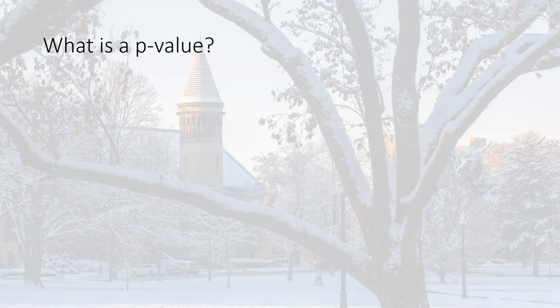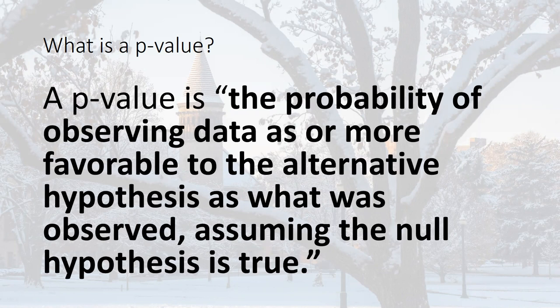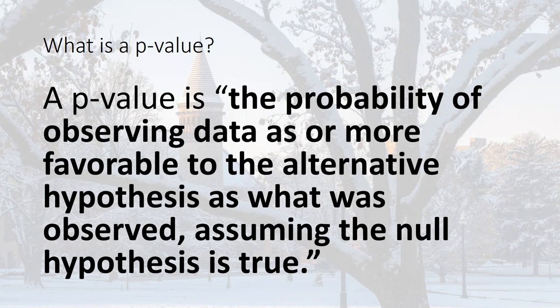First we need to talk about the definition of a p-value — this is something you need to absolutely know from here on out and in every stats class you take subsequently. A p-value is the probability of observing data as or more favorable to the alternative hypothesis as what was actually observed, assuming the null hypothesis is true. There are three main parts to any definition of a p-value.